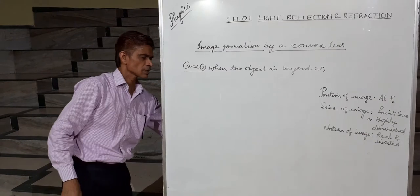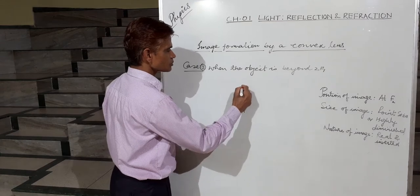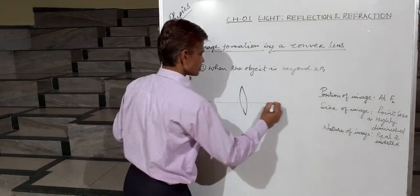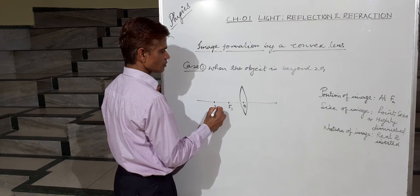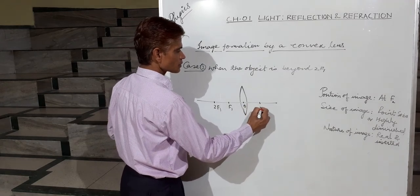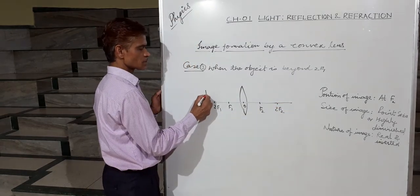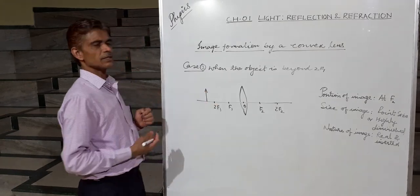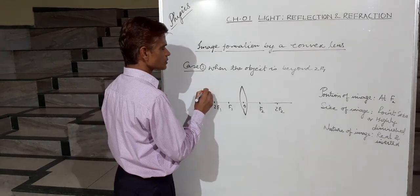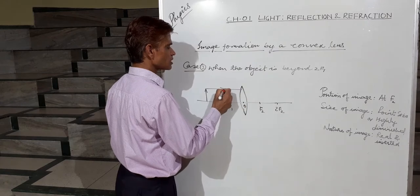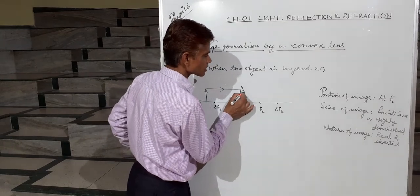This is the optical center, F1, 2F1, and F2. The object is beyond 2F1, meaning somewhere between infinity and 2F1. Take one ray parallel to the principal axis — this ray after refraction, according to rule number 1, will pass through focus F2.